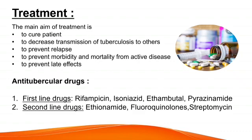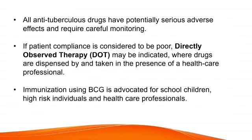Antitubercular drugs work against TB and are classified into two categories. First-line drugs include rifampicin, isoniazid, ethambutol and pyrazinamide. Second-line drugs include ethionamide, fluoroquinolones, streptomycin, etc. All these antitubercular drugs have potentially serious adverse effects and require careful monitoring. If patient compliance is poor, directly observed therapy may be indicated, where drugs are dispensed and taken in the presence of a healthcare professional. Immunization using BCG is advocated for school children, high-risk individuals and healthcare professionals.